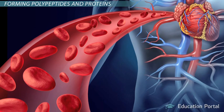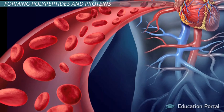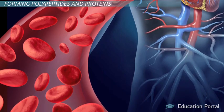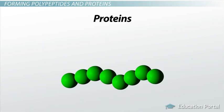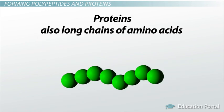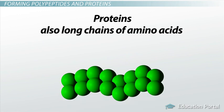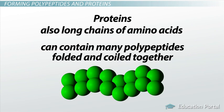Polypeptides are important to the body and can be found in places like the oxygen-carrying hemoglobin of your blood. Proteins are also long chains of amino acids, and there's some debate over the distinction between a small protein and a polypeptide, yet we do see that some larger proteins can contain many polypeptides folded and coiled together.